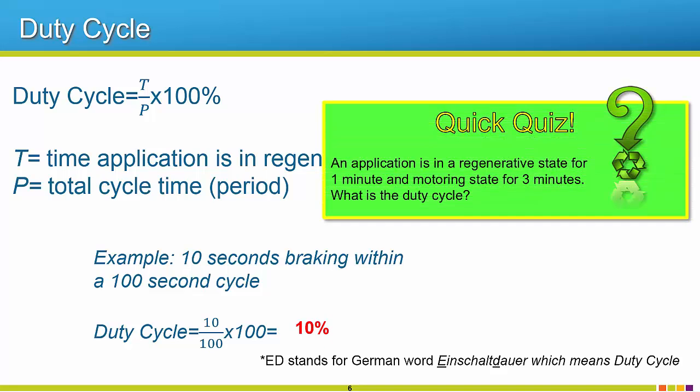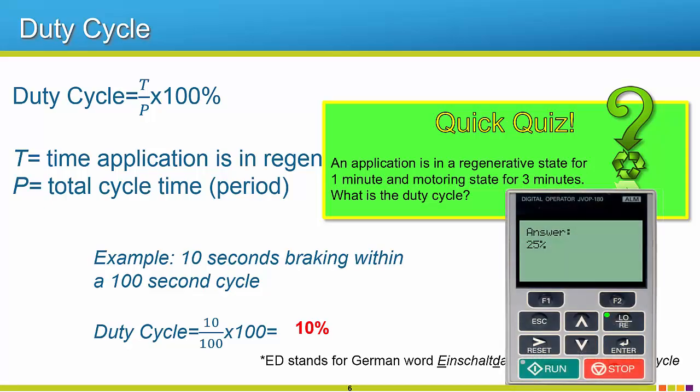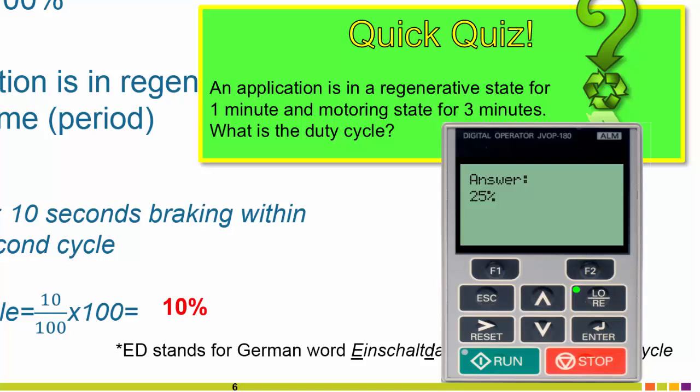Here's a quick quiz to test your knowledge. An application is in a regenerative state for one minute and a motoring state for three minutes. Calculate the duty cycle. You should find that the answer is going to be 25%. So we got this by figuring out what the whole cycle was. So four minutes total. We were in regenerative state for one of those minutes. So one over four is 25%.